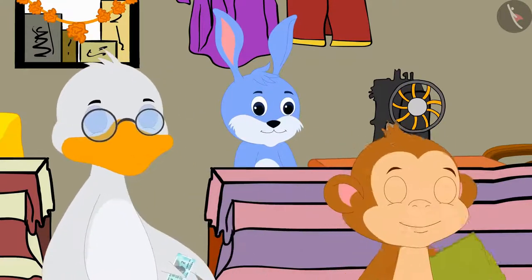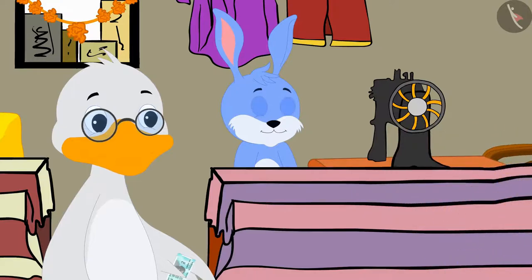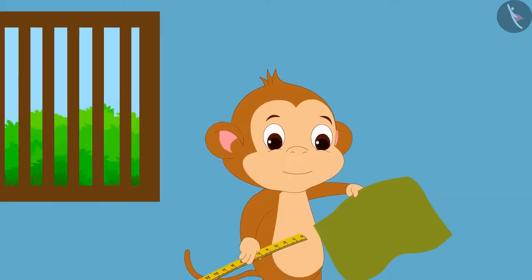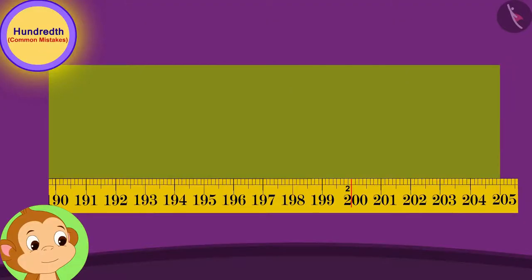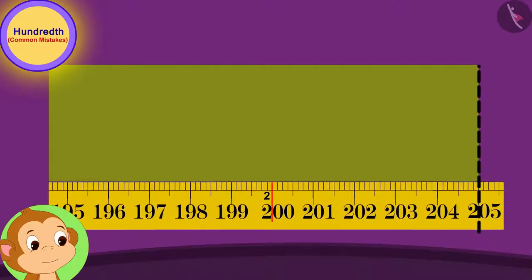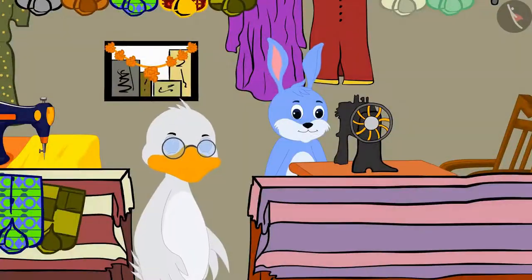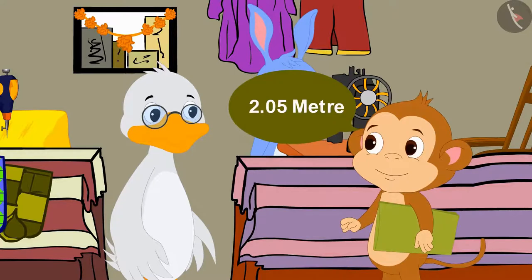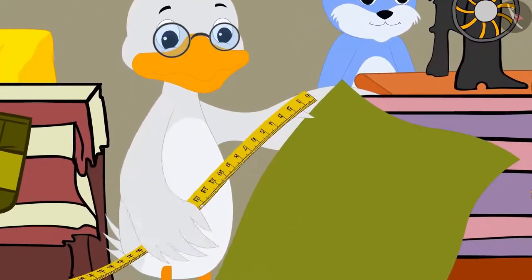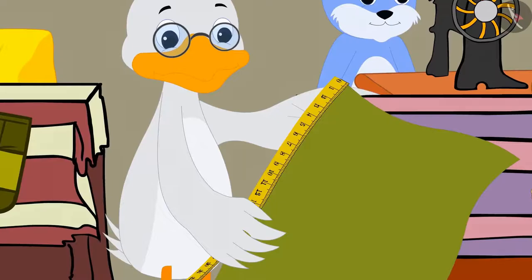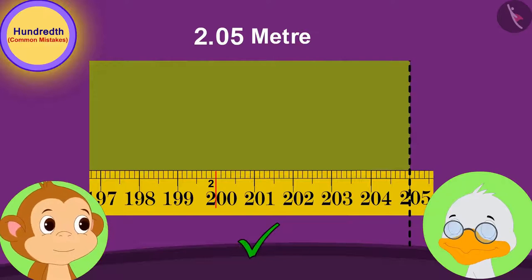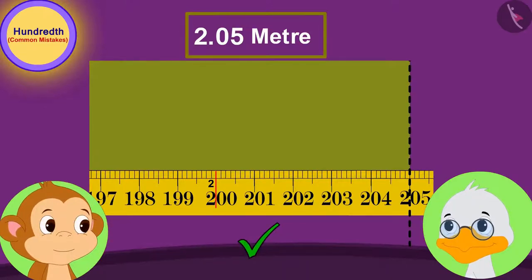Babban paid the money for the cloth to Uncle and returned home. On returning home, when Babban measured the cloth with his tape, he found that the length of the cloth was 2.05 meters. He immediately reached Uncle's shop. When he told this to Uncle, Uncle once again measured that cloth with his tape and found that Babban was right. The length of the cloth was actually 2.05 meters.